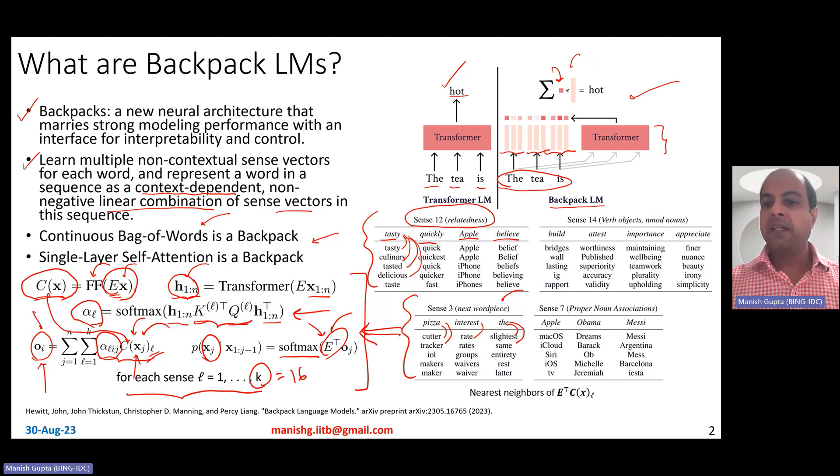Now, you can also have verb object senses. So for example, build bridges, or attest worthiness, or maintaining importance, or appreciate finer details, or appreciate nuances, and so on. These are also proper noun sense associations. For example, Apple with Mac OS X, or Mac OS, or Obama with Barack, or Messi with Argentina, and so on.